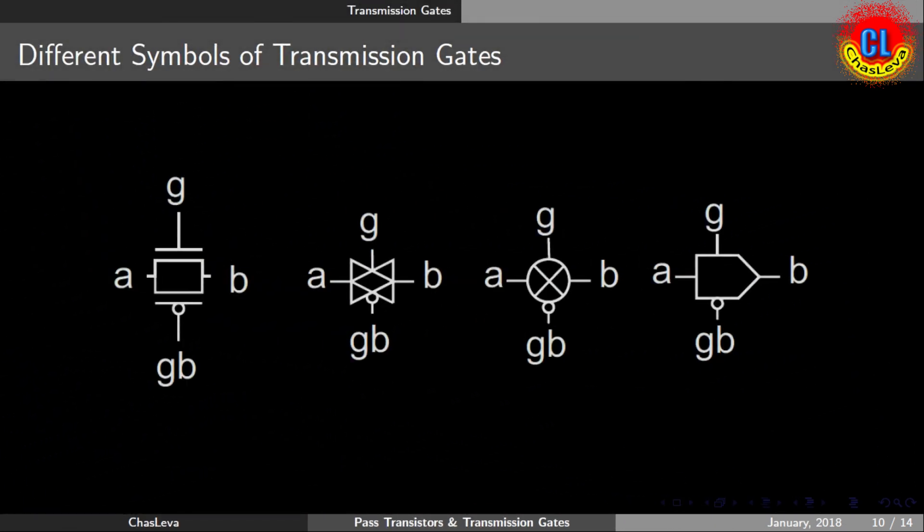The different symbols used to denote transmission gate are shown here. Commonly used symbol for transmission gate is this, shown in red circle.